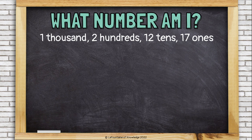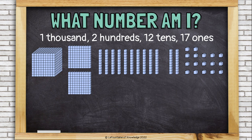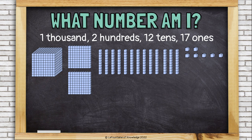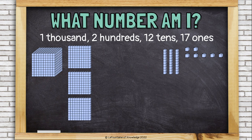This time I have 1 thousand, 2 hundreds, 12 tens, and 17 ones. Let's start in the ones place — I can't put a 17 in the ones place. There's another 10 hiding in those 17 ones. Let's take out 10 ones and group them together to create another 10. Now I have 13 tens, and I can't put a 13 in the tens place. So I need to group or bundle 10 of the tens together to make another 100. This looks like it will work. I have 1,337.